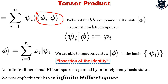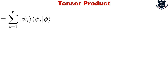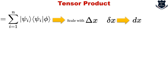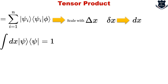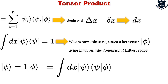We now apply this insertion of identity trick to an infinite-dimensional Hilbert space, which is spanned by infinitely many basis states. To translate the equation to infinite dimensions, we scale delta-x and let it go to zero, so delta-x becomes the infinitesimal interval dx and the sum sign becomes an integral sign. The unit matrix now has infinitely many columns, allowing us to represent ket vectors in infinite-dimensional Hilbert space.